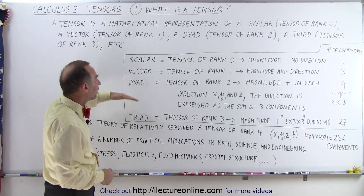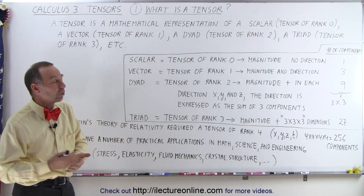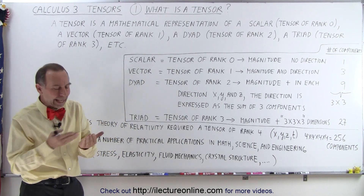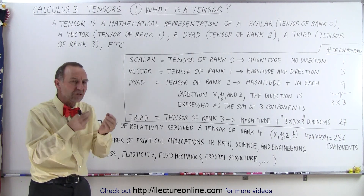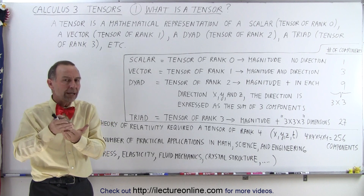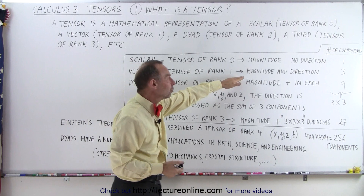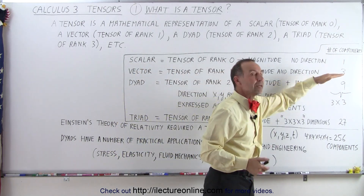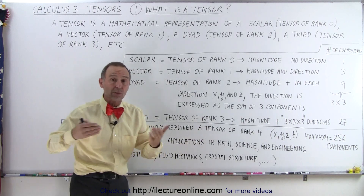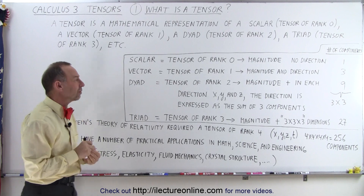A tensor of rank one represents a vector. Vectors are very common — most of us know what vectors are. They have a magnitude and direction, and the direction can be described as three components: one component in the x, one in the y, and one in the z direction. Those three components describe a vector — the magnitude in the x, y, and z directions.